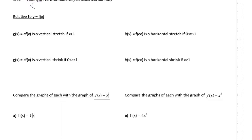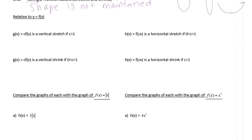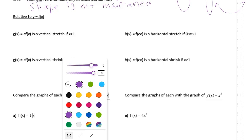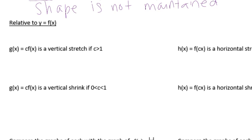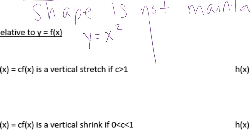Shape is not maintained. So if your original is like this, then the new one will be either skinnier or wider. So let's look at some options. We are going to look at y equals f of x — let's just look at y equals x squared. That's our quadratic. We know that our original is just a parabola that goes through the origin.